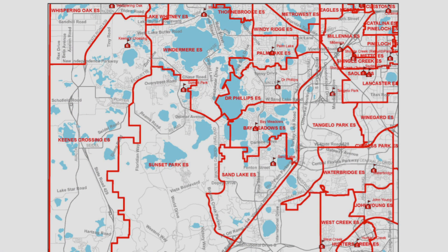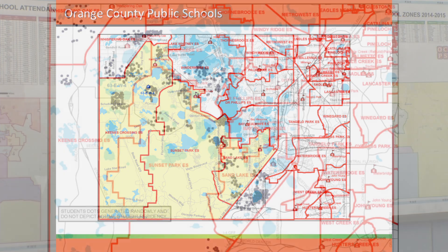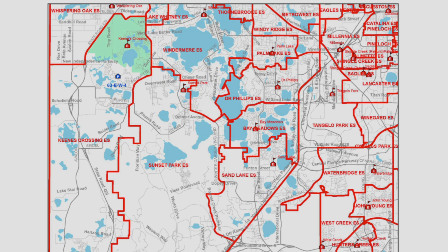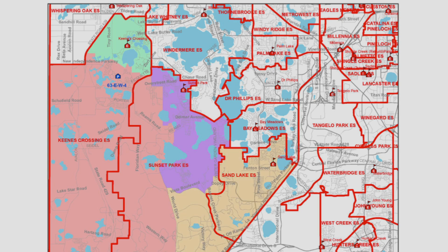The red lines represent elementary school boundary lines. Based on the student enrollment information and projection numbers, this area needs a new relief school. We start looking very closely at the student population to determine which area needs to go to the new school. Based on the data provided, we determine that the green area will become a new King's Crossing Elementary School. The pink area will be the new zone for the relief school. The purple area becomes Sunset Park Elementary School, and the orange will be the new Sand Lake Elementary School.